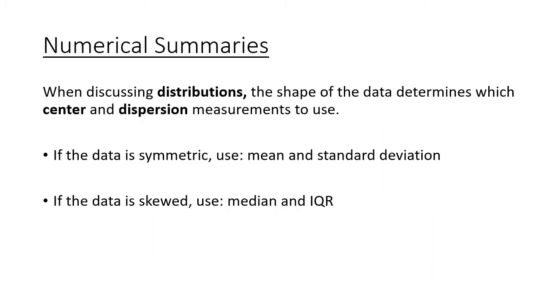When we discuss distributions, the shape of the data determines which center and which dispersion would be the better measurements to use. If our data is symmetric, if we have that bell shape, we want to use the mean and the standard deviation because those are going to be incredibly useful when we are working with probability and try to combine the statistics describing numbers with how likely it is that that small sample really describes my population. But, if the data is skewed, we want to use the median and the IQR for our dispersion because, if the data is skewed, that mean is going to get pulled towards the tail, and it's not going to be as accurate anymore. Good luck with your homework, and let me know if you have any questions.